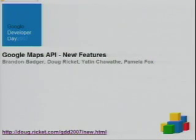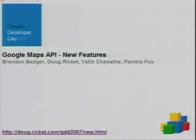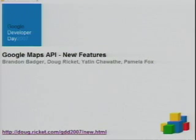Good afternoon. My name is Doug Rickett. I'm a software engineer on Google Maps here in Mountain View, California. This presentation is about new features in the API. I'm going to start with some of the recent features from the last six months that you wouldn't have found at GeoDeveloper Day last year. After that, we'll go into features released this week, and we even have some presentations on features not yet released, given by Brandon and Pamela.